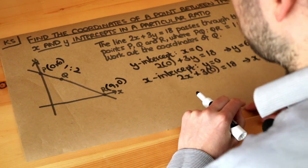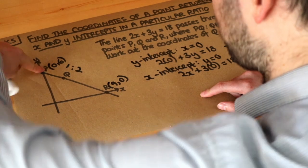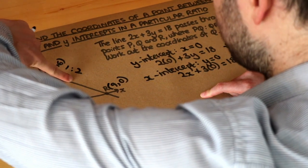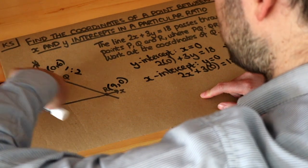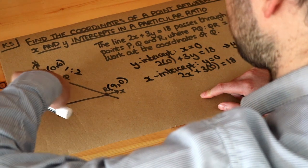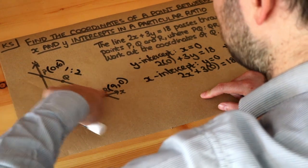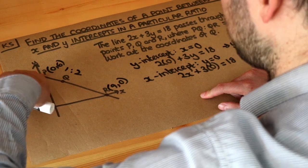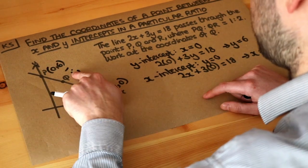So we've worked out the intercepts, and now somehow we need to go from 0, 6 towards 9, 0, and we're going to split that whole distance in the ratio 1 to 2. So that means that this distance is twice as long as this distance here, according to this ratio.